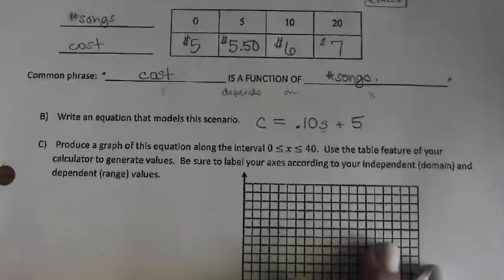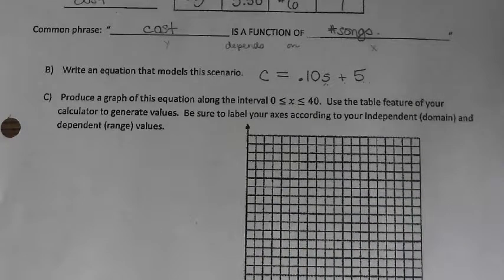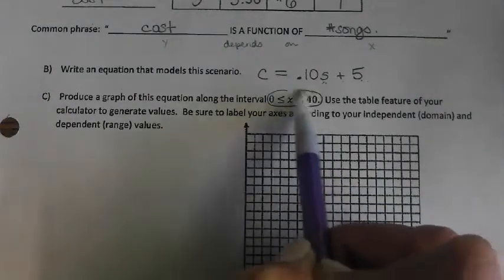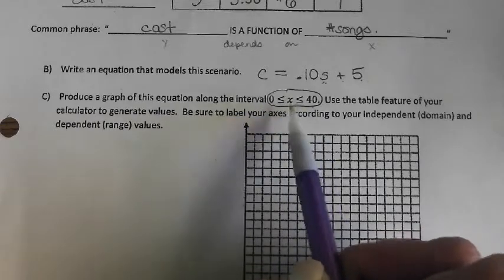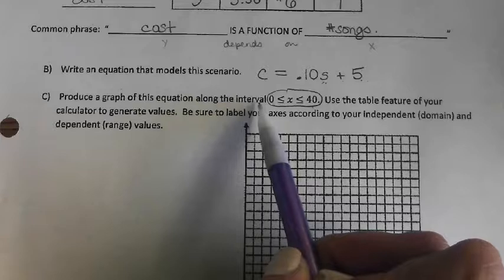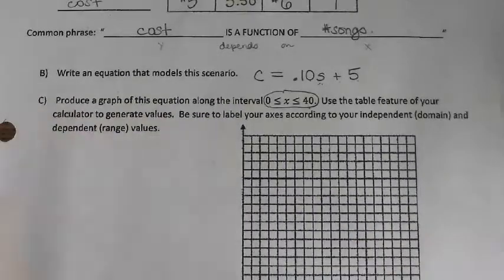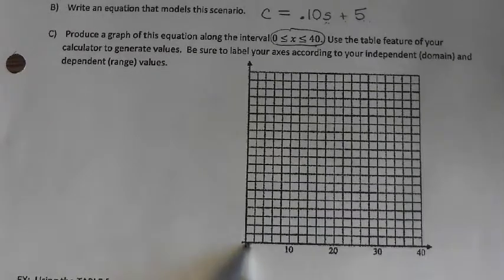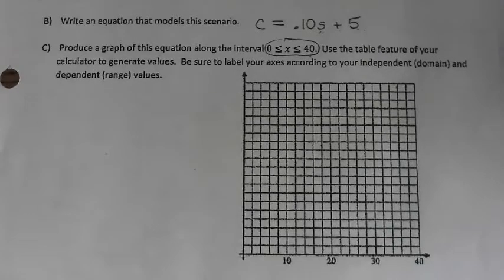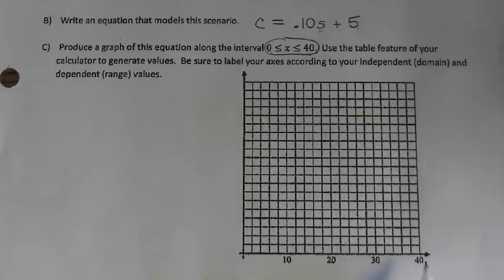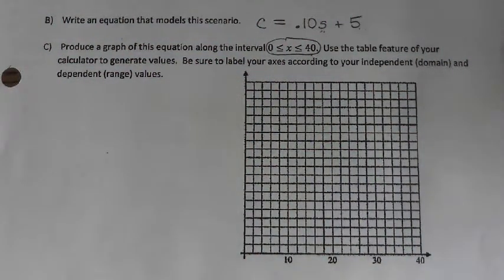Now this wants us to graph it. When you're asked to graph stuff on the Regents, you need to pay attention to the instructions. This only wants us to graph it from 0 songs up until 40 songs. It doesn't want us to graph it for negative 5 songs because that doesn't make any sense. They only want to see this graph to 40.